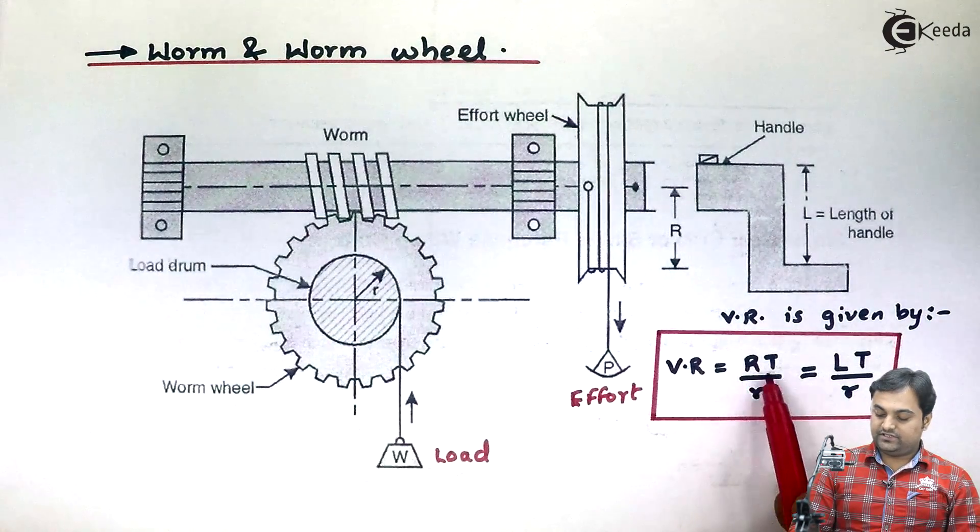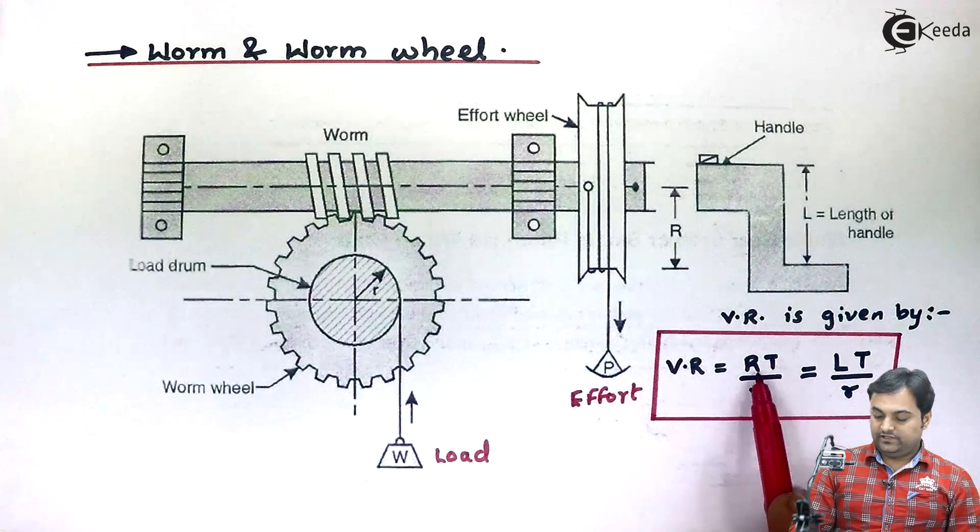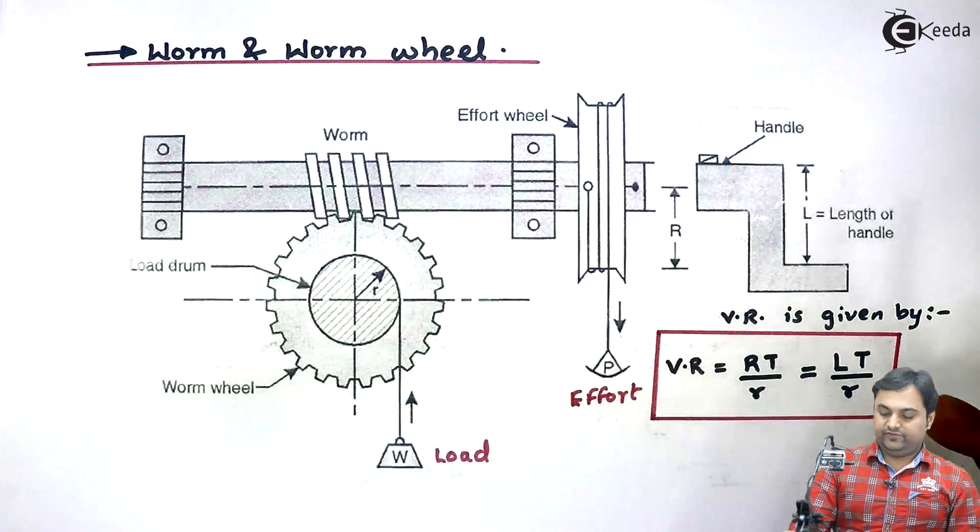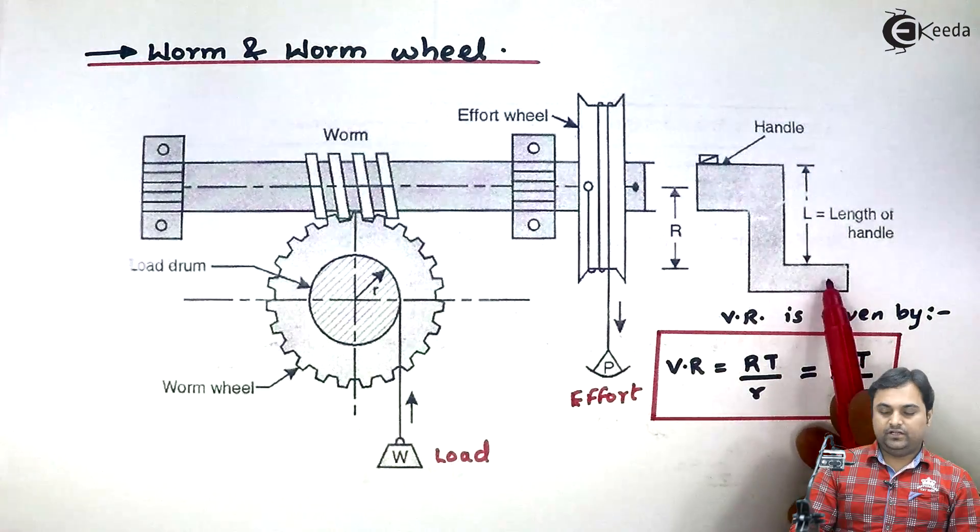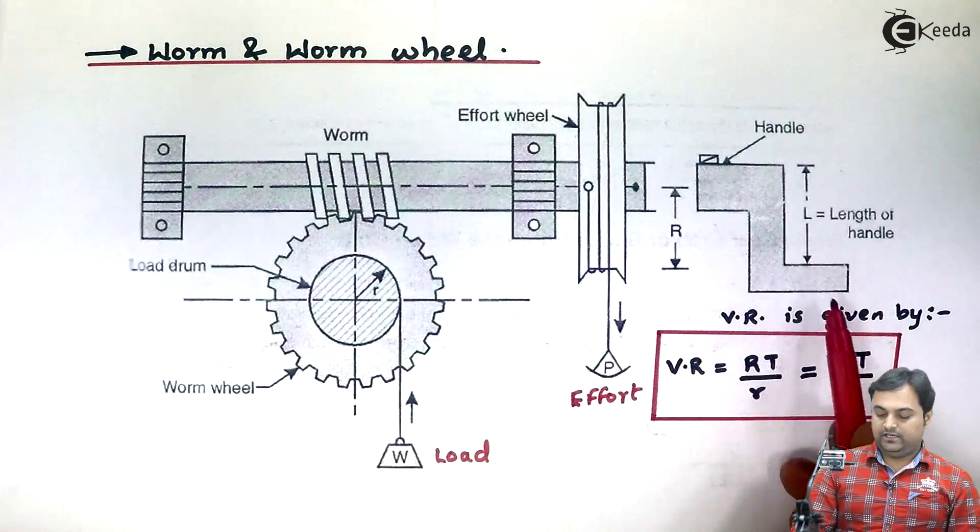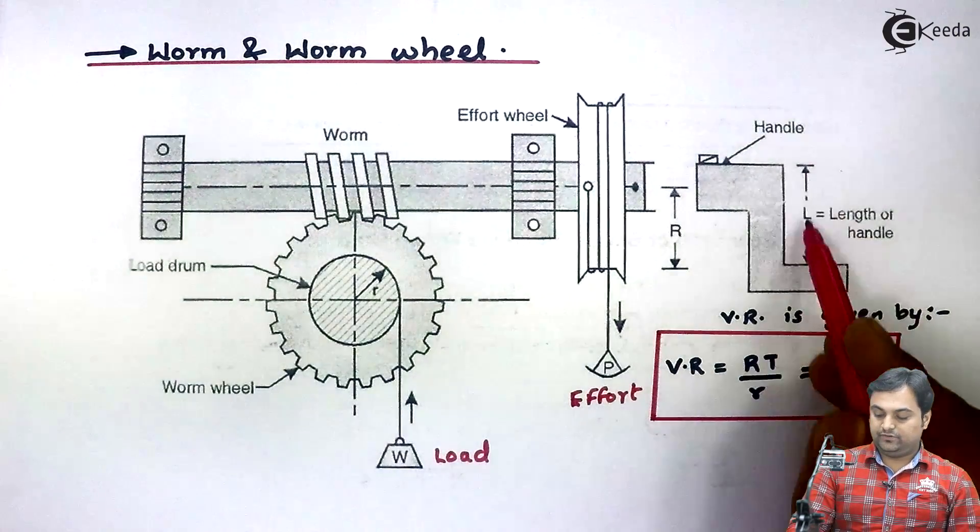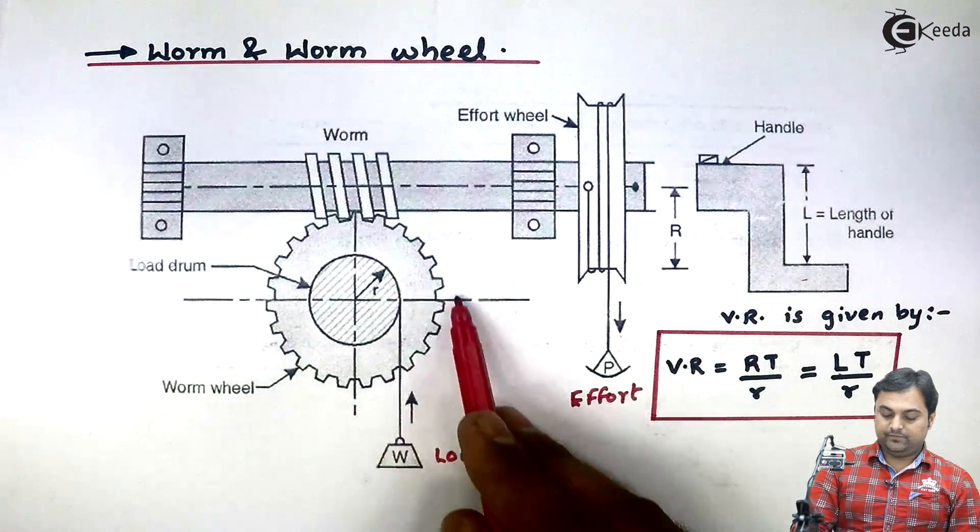Now this is the effort wheel. If we are having effort wheel then we are taking capital R. Suppose if we are replacing effort wheel with a handle whose length is capital L, so the formula is L times T by r, where capital L is the length of handle, capital T is the number of teeth on worm wheel, and small r is the radius of load drum.